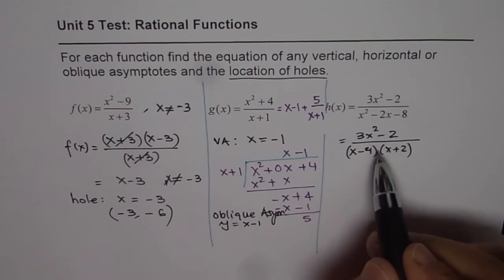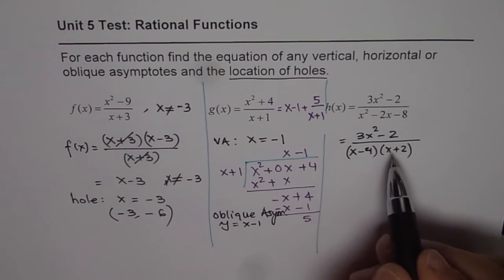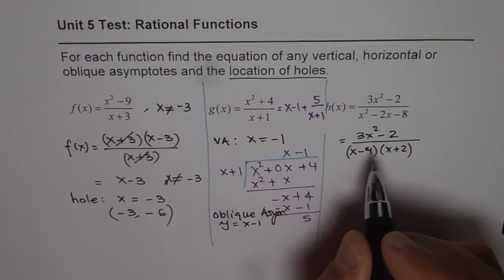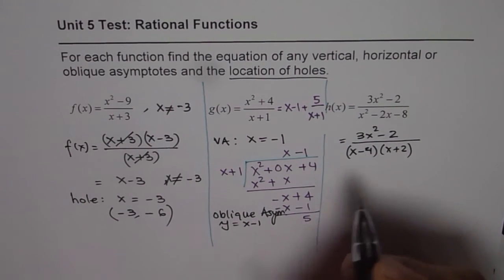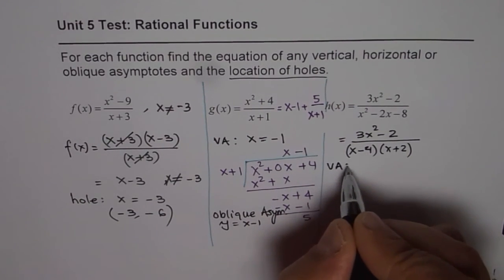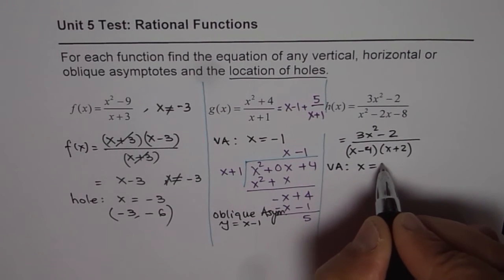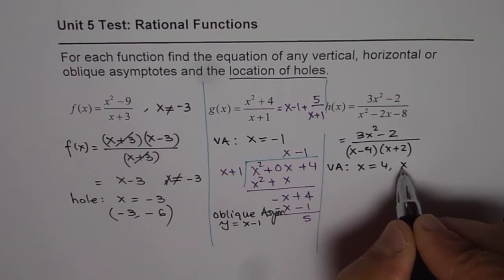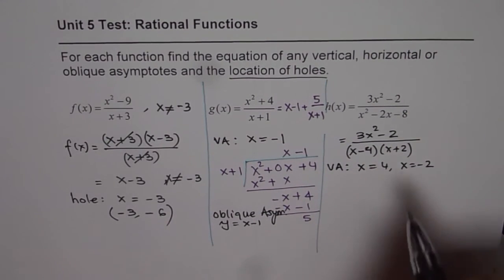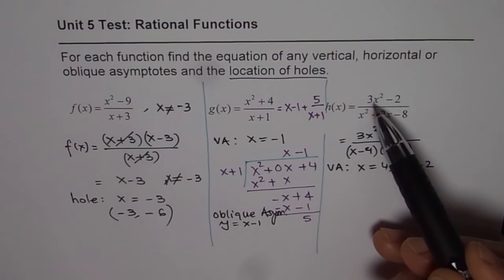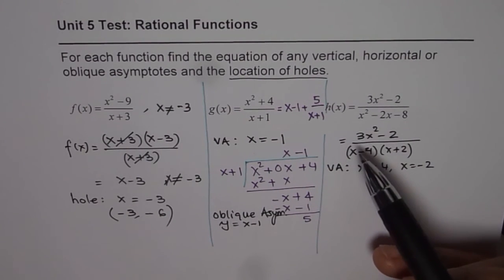Now we do not have any common factor between numerator and denominator. And so we have two vertical asymptotes. So we have vertical asymptotes here. First one is at x equals to 4, the other one is at x equals to minus 2.